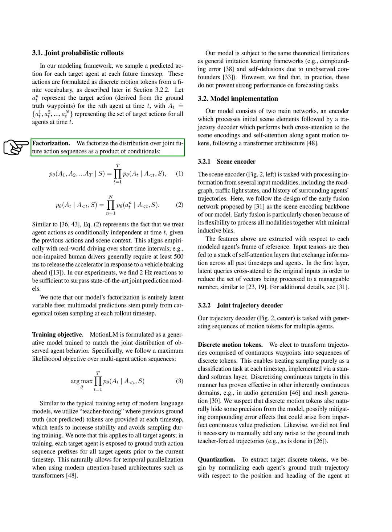This means that we treat agent actions as conditionally independent at a given time, given the previous actions and scene context. In our experiments, we found that our model's factorization, which is entirely free of latent variables, is sufficient to surpass state-of-the-art joint prediction models. The multimodal predictions stem purely from categorical token sampling at each rollout time step.